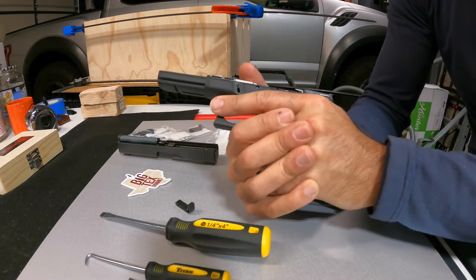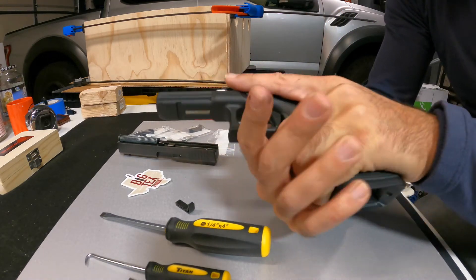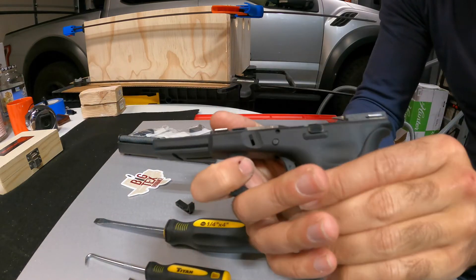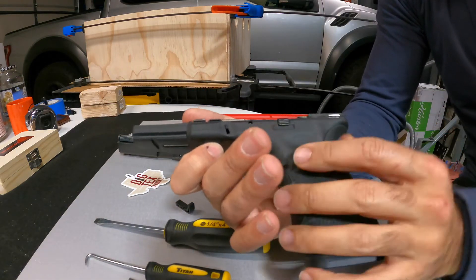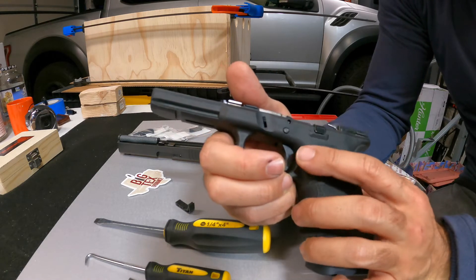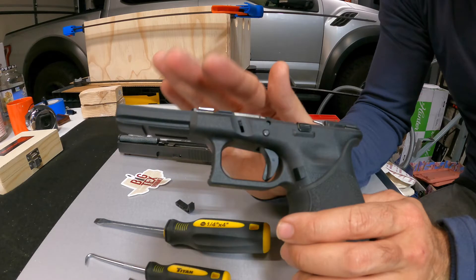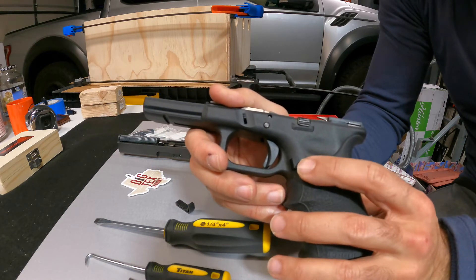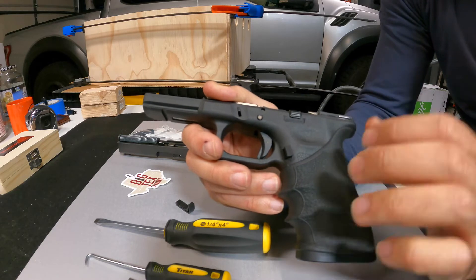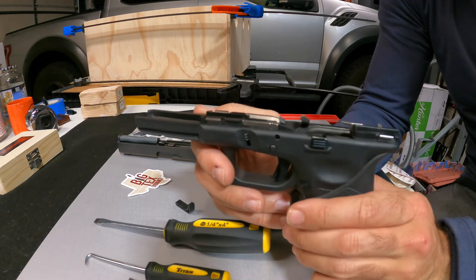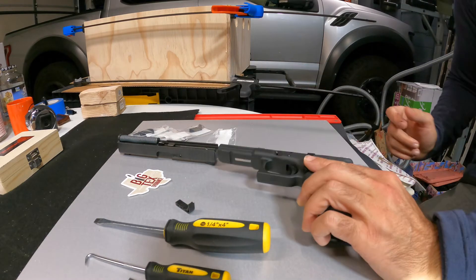One thing I noticed - with my grip, my index finger from my other hand digs into this extended magazine release when I'm pushing down. So the last step for me is to hit the corners with a file. I like to leave the slide off when I do that. Try to be careful, it's usually just two or three passes with the file and this plastic just rounds out and becomes perfect.